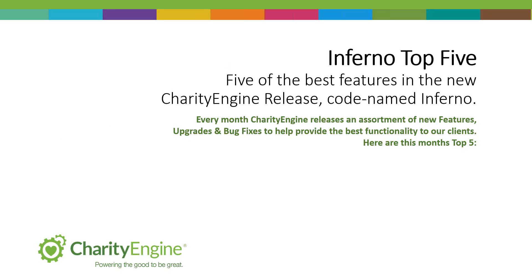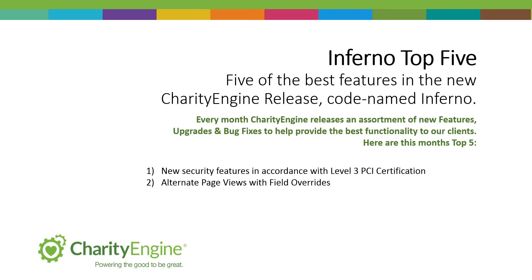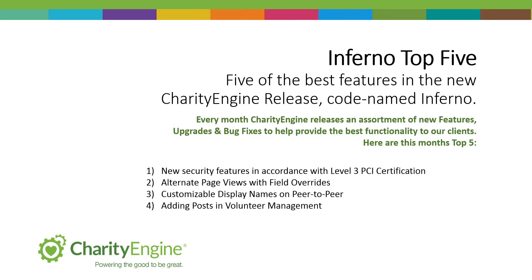There are a lot of features and functionalities. Some are a little complex. What I tried to pull out are five of the ones I thought were most interesting, usable, and things that people aren't using to the level they could. In this top five, we're going to be looking at: new security features in accordance with Level 3 PCI certification, alternate page views with field overrides, customizable display names on peer-to-peer, adding posts in volunteer management, and queryability in opportunities.